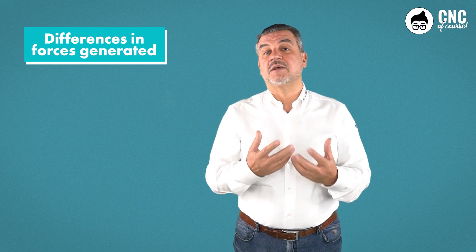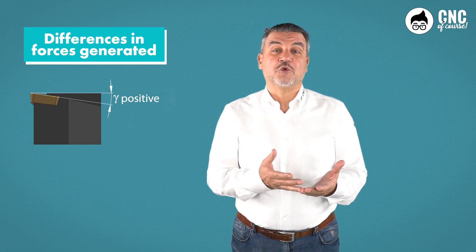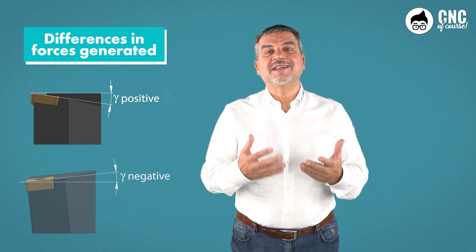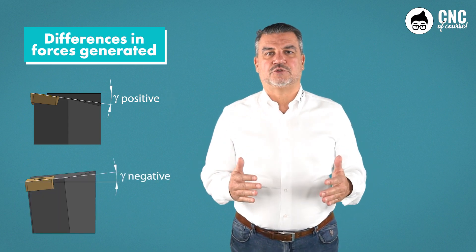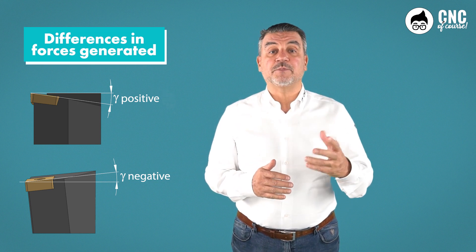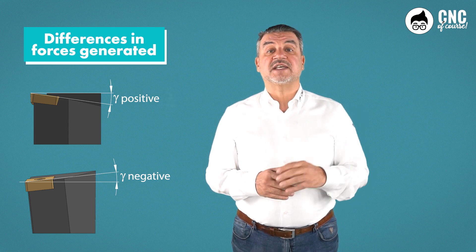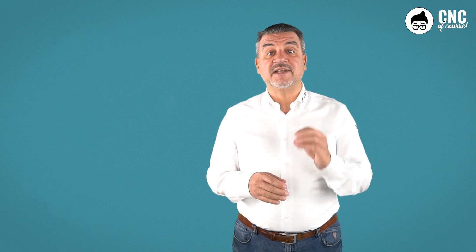starting with the difference in the forces generated. It doesn't take an engineer to work out that a positive tool generates less cutting force than a negative tool. Most obviously, because the negative tool tends to almost oppose chip formation. But to be more precise, let's analyze the two cutting edges in the chip formation process, assuming that we are machining the same type of material with the same parameters and the same volume of chips